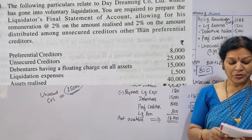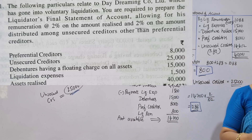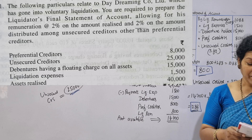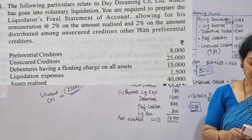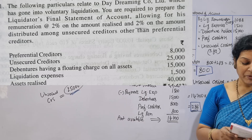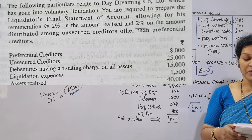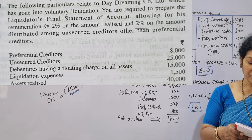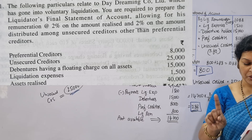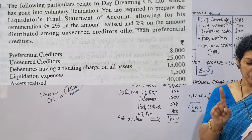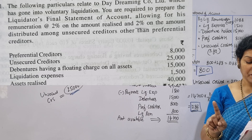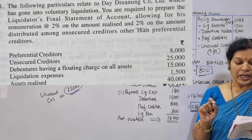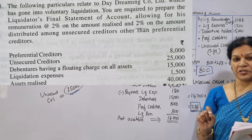The following particulars relate to Daydreaming Company Limited, which has gone into voluntary liquidation. You are required to prepare the liquidator's final statement of account, allowing for his remuneration at the rate of 2% on the amount realized.